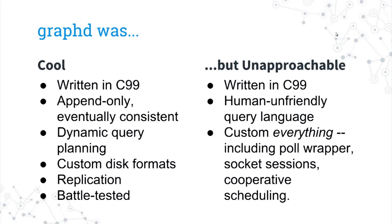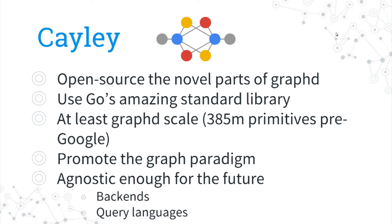When Freebase was going to shut down, because we had been completely consumed by Google, we were giving our data back to the community through Wikidata, open sourcing some tools like Google Refine and so on. But not GrafD. Why not GrafD? Well, GrafD was cool. It was written in C99, had been running in production for a long time, replication, the whole nine yards. But it was also really kind of full of technical debt — it was written in C99, had a human-unfriendly query language, and custom everything like our own session libraries, our own wrappers around ePoll. It was really kind of a mess.